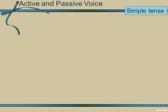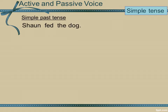Let's look at active and passive voice in the simple tense — the simple past tense. Sean fed the dog. Sean is my subject, fed the verb, the dog the object.